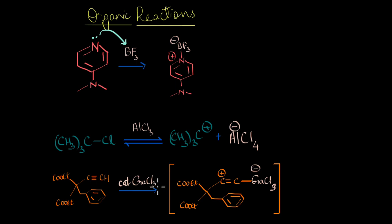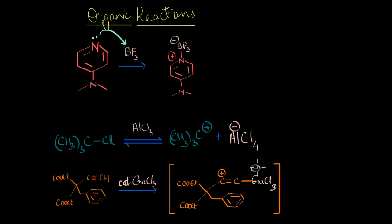In the third reaction, gallium again ends up getting a negative charge. Even though it starts as GaCl3, the pi electrons shift to gallium, carbon gets a positive charge, and gallium gets a negative charge. So in general, you can see that all of these elements are accepting a pair of electrons.